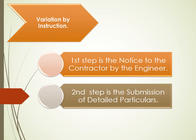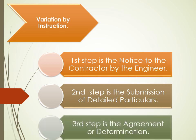If the parties have agreed to the omission of any work which is to be carried out by others, the Contractor's proposal may also include the amount of any loss of profit and other losses and damages suffered or to be suffered by the Contractor as a result of the omission. The third step is the Agreement or Determination. The Engineer is to proceed under Subclause 3.7 to agree or determine the extension of time if any, and the Contract Price Adjustment in accordance with Clause 12 Measurement and Payment.